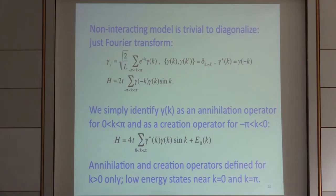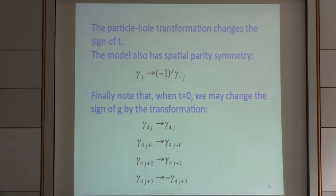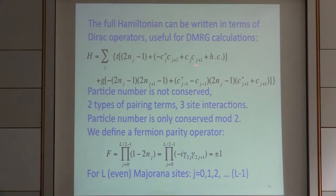Let's start with the non-interacting case — just the hopping term. This T term actually contains a hopping term, a pairing term, and a chemical potential, so it's related to the Kitaev model. Now we're adding interactions. For two equal T's, this model is harmonic and exactly solvable. All we need to do is Fourier transform the Majorana modes. Because the gamma_j's are Hermitian, gamma of minus k equals gamma of k dagger. The dispersion relation is sine k, existing over half the Brillouin zone from zero to pi.